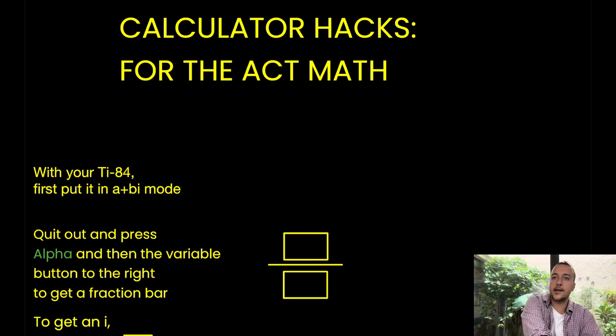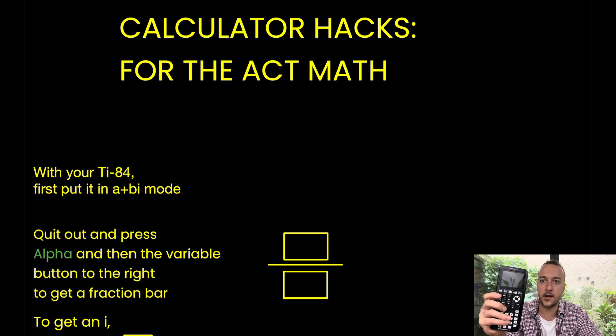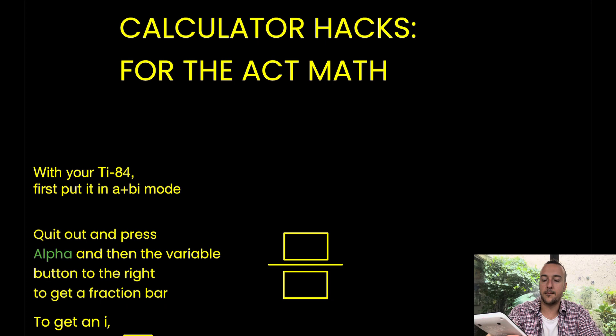So grab your TI-84+, really this one right here, and let's get to work. The first thing that you're going to want to do is put your calculator into A plus BI mode. So first press mode right here, and then you're going to go down to A plus BI right next to the real option. Again, A plus BI, and then you are going to press enter on A plus BI.